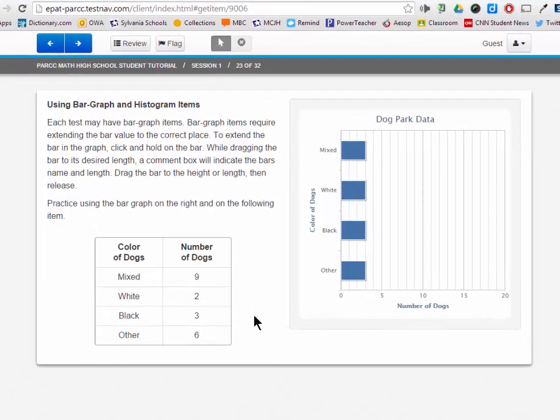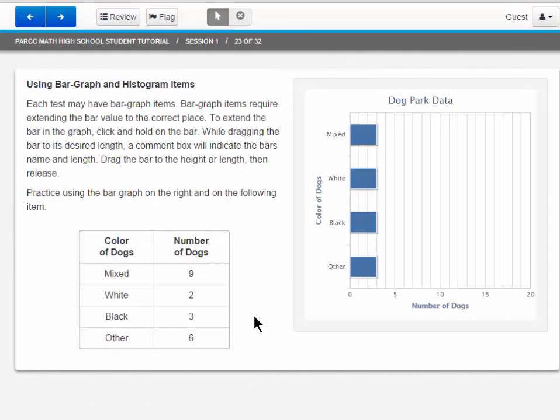Each test may have bar graph items. Bar graph items require extending the bar value to the correct place. To extend the bar in the graph, click and hold on the bar. While dragging the bar to its desired length, a comment box will indicate the bar's name and length. Drag the bar to the height or length, then release. It's fairly simple.